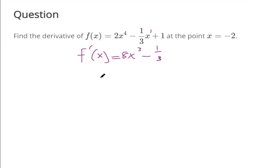They want to know the derivative at a specific point. So that just means we're supposed to plug in negative 2 everywhere where we see an x. So negative 2 to the 3rd, that's negative 8. So this is negative 64 minus 1 third.